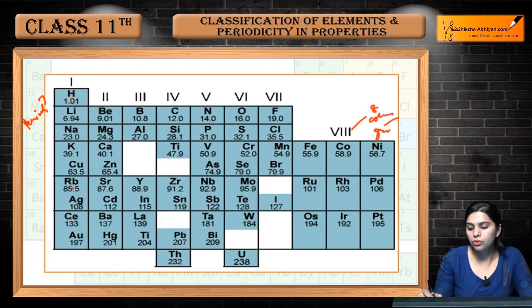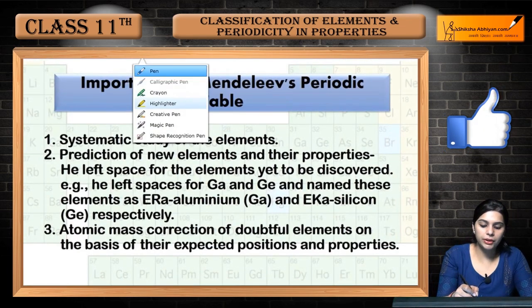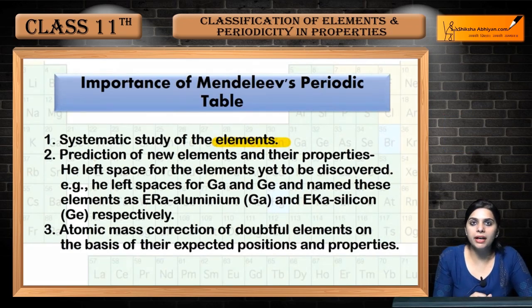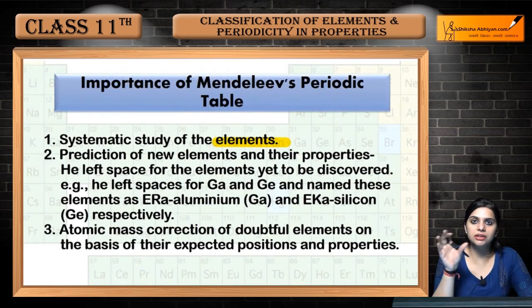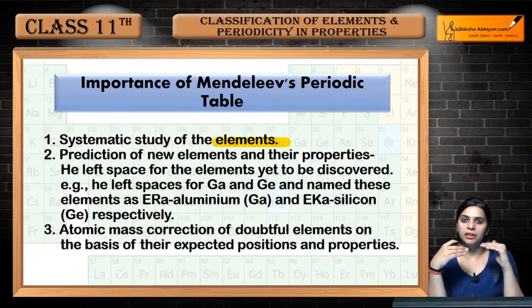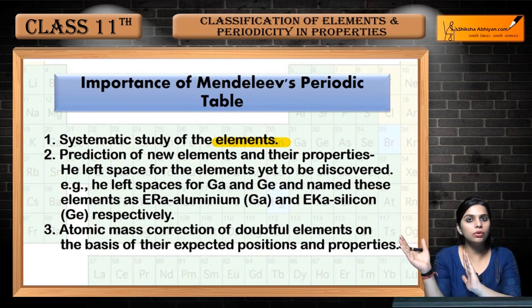Now, what is the importance of this periodic table? The first importance is the systematic study of elements. Since elements were arranged in increasing atomic weight and kept in a proper system, divided into groups and periods, we got a systematic way to study our elements.